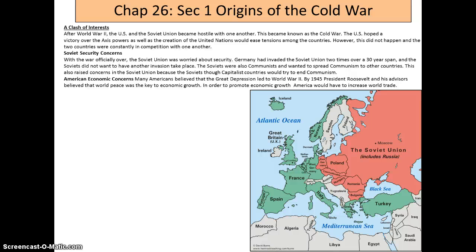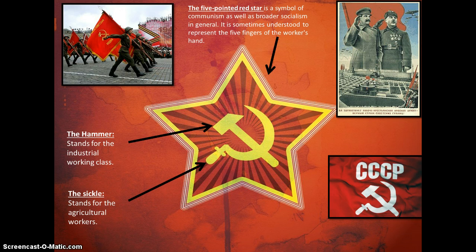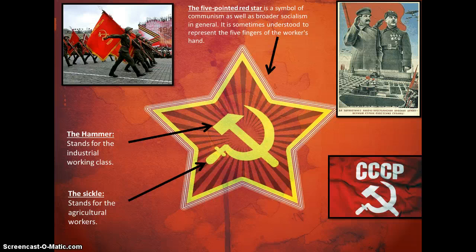American economic concerns: many Americans believed that the Great Depression led to World War II. By 1945, Roosevelt and his advisors believed world peace was the key to economic growth, and that America would have to increase world trade. Now, some symbols of the Soviet Union include the five-pointed star, the hammer and the sickle — the hammer stands for the industrial working class and the sickle for agricultural workers. The parade location in the upper left is Red Square, red being important to communism. The letters CCCP are actually read as SSSR, translating to USSR.